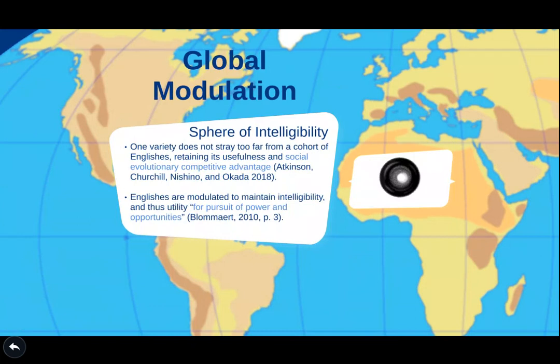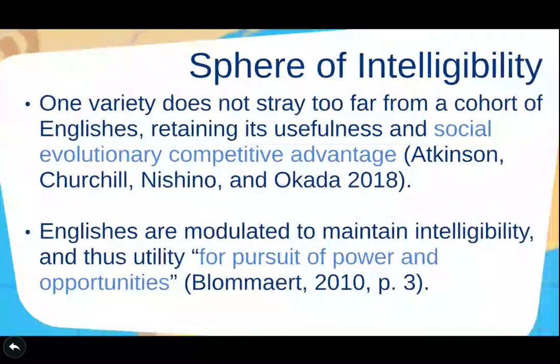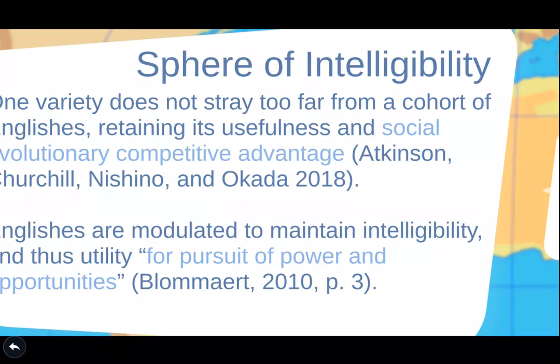So let's first take a look at global modulation. Global modulation is visualized as the sphere of intelligibility. This is where one variety does not stray too far from the entire cohort of Englishes, retaining its usefulness and social evolutionary competitive advantage. Basically, Englishes are modulated to maintain intelligibility and thus utility for pursuit of power and opportunities.